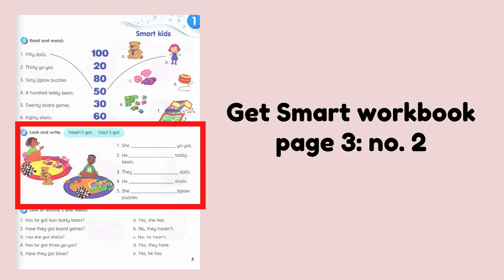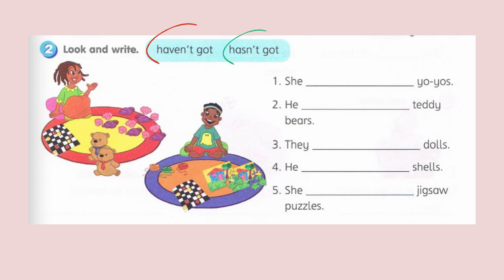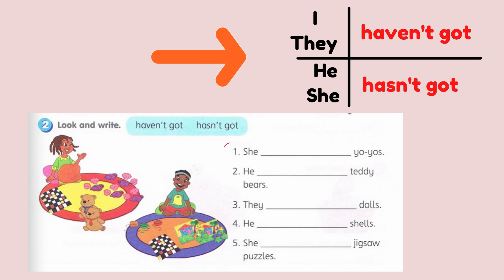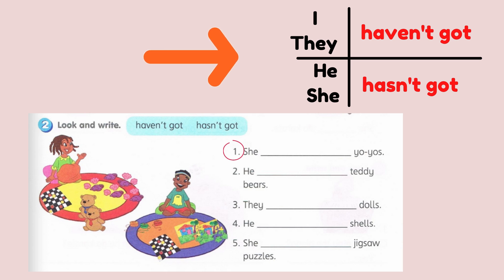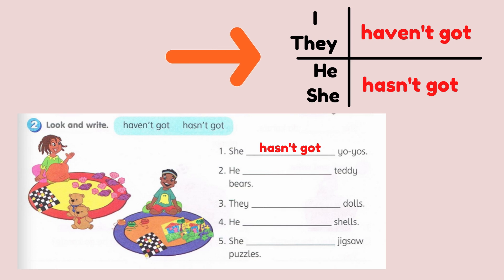For lesson 1, you have to complete the exercise in Get Smart Workbook page 3, number 2. You must choose whether the answer is haven't got or hasn't got. Soalan ni boleh refer notes yang ditunjuk oleh anak panah. So, cuba teka — try to guess what is the answer for number 1. The answer for number 1 is: she hasn't got yoyos.